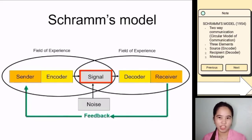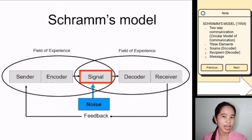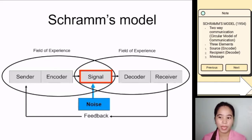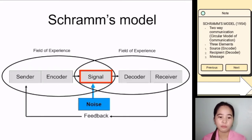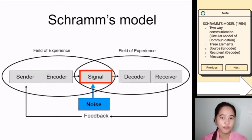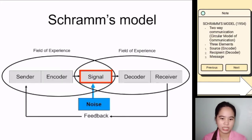Schramm's model of communication accounts for something that happens to the signal, and that is noise. Noise is anything that impacts the signal. That noise can certainly be auditory — it could be airplanes flying overhead or a motorcycle passing by. But in Schramm's model, communication could also be interrupted by noise that may not be auditory. For example, the way that you feel could impact your ability to receive the signal — if you're hungry, tired, or cold, all these things can impact the signal.